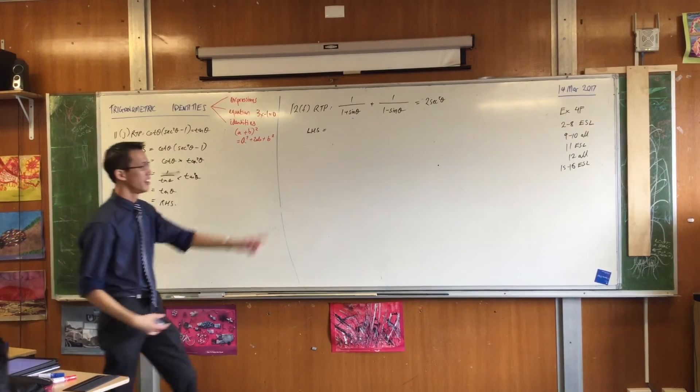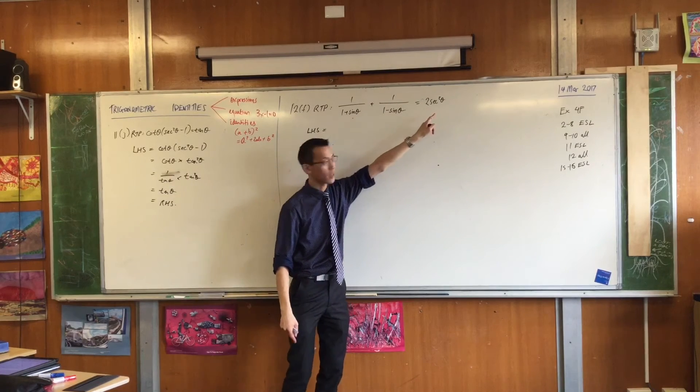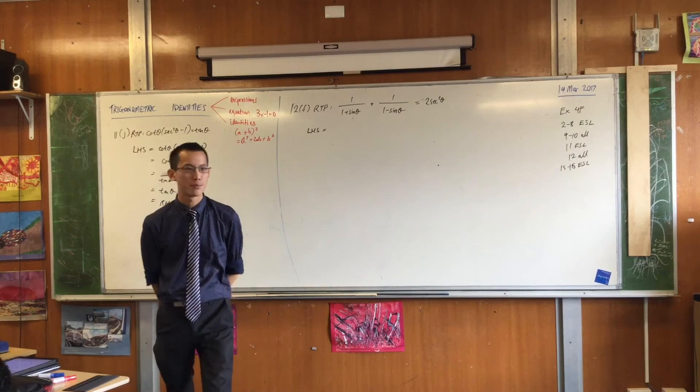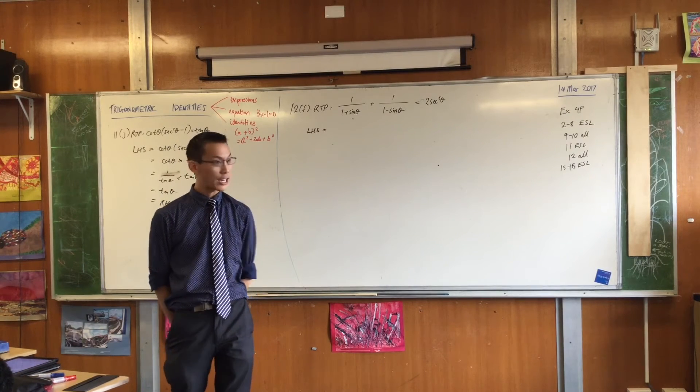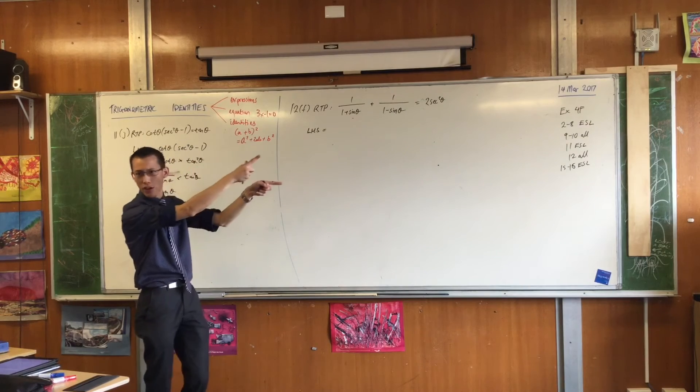The left-hand side is clearly a disaster. It's got two things, I can combine them, and hopefully this is where I end up, okay? Now, they're two fractions, so what is an instinct for you to do? Get a common denominator, and then you can combine them into one.